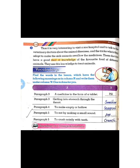Now we will move towards the exercise. First we have vocabulary on page number 118: find the words in the lesson which have the following meanings. A medicine in the form of a tablet — the word used in the reading is 'pill.' Getting into the stomach through the throat — the word used in the reading book is 'swallow.'